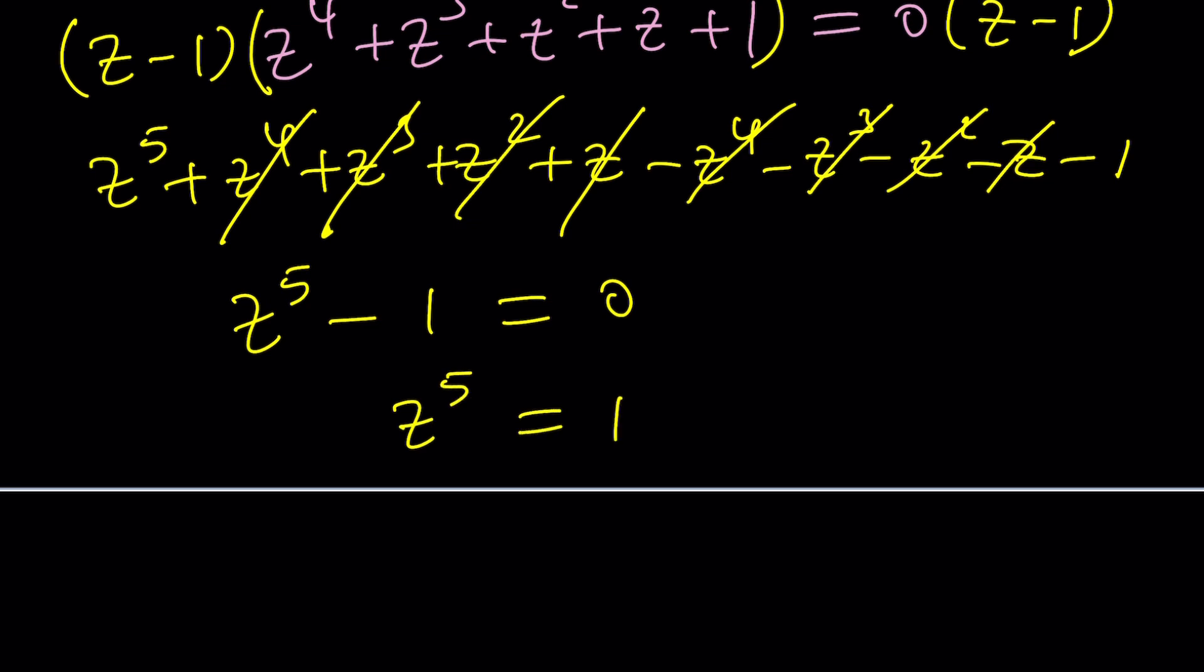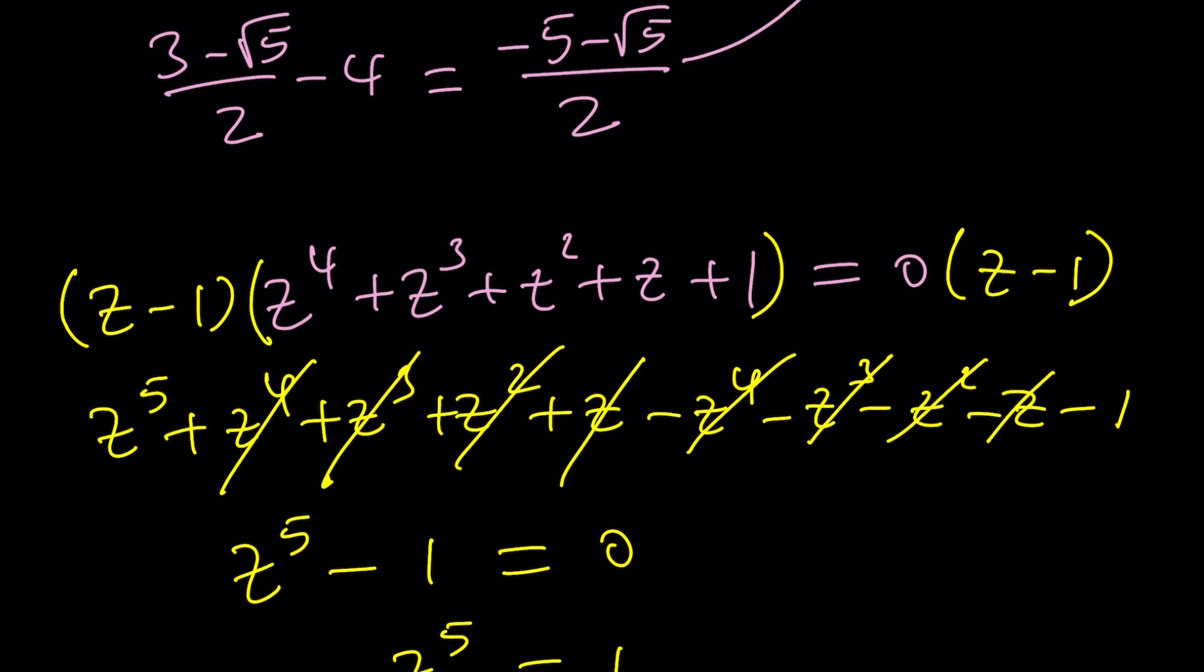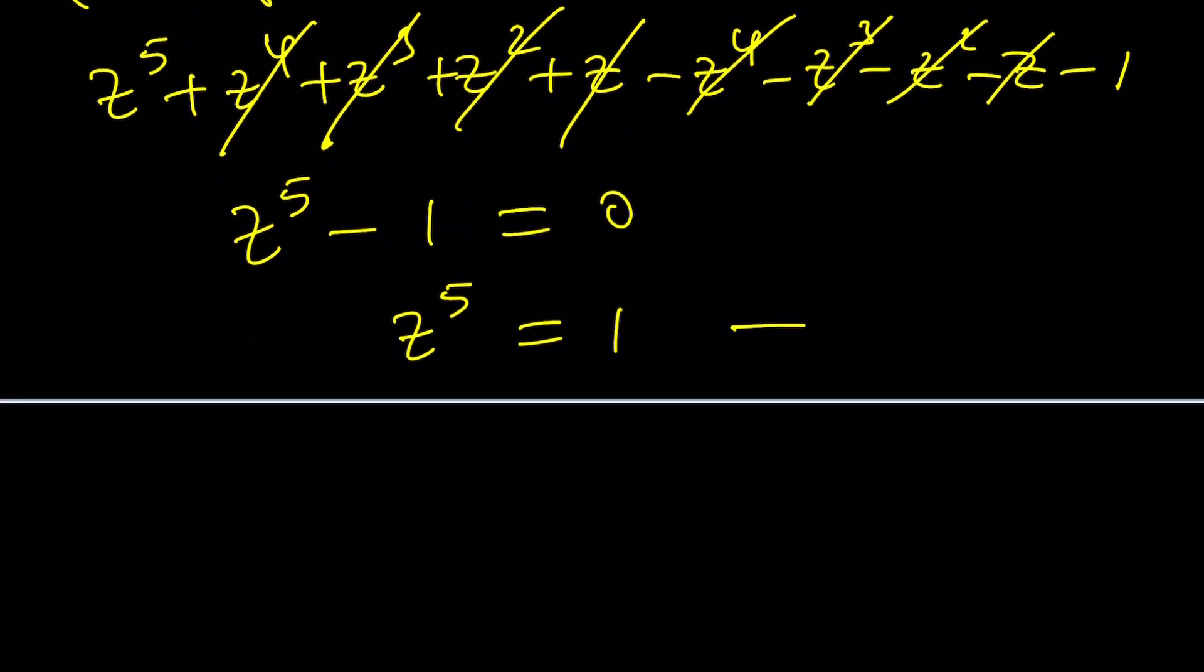Does that mean z equals 1? In the real world, yes. But in this case we have to be careful, because z equals 1 did not satisfy the quartic but it does satisfy the resulting equation, which means we introduced it as an extraneous solution. So what are we supposed to do? We need to add a note saying that z to the fifth equals 1, but z does not equal 1. In other words, we're looking for fifth roots of unity except for the unity itself.